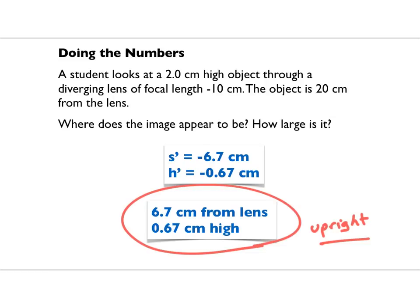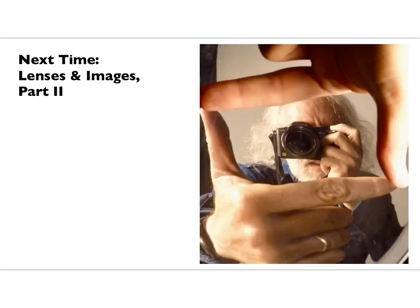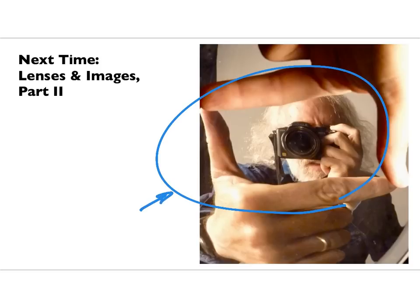That's how we do ray diagrams to find images from lenses. You've got some examples on the homework assignment, and we're going to apply this to all kinds of optical instruments. Before we do that, we'll have another class where we talk about lenses, images, and mirrors — I used a mirror to make this picture right here. How would you do such a thing? We'll talk. Have a great rest of your day, and I'll talk with you soon.